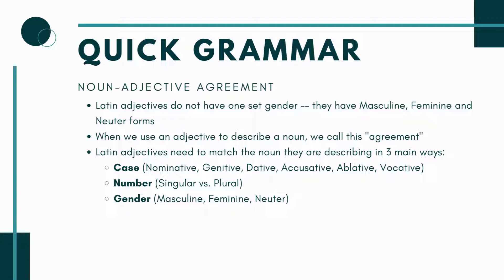When we match an adjective to describe a noun, we say they agree with each other. There are three ways adjectives need to match nouns: case, number, and gender. Case means how it's being used — nominative, genitive, dative, accusative, ablative, vocative. If I'm describing a nominative case noun, I use a nominative case adjective. Number means singular or plural — singular noun needs a singular adjective. Plural noun needs a plural adjective.